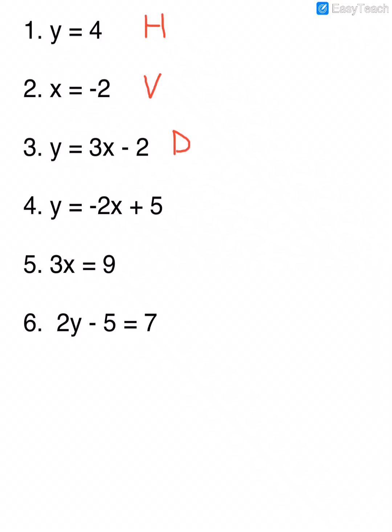For number 4, y equals negative 2x plus 5. That line would be diagonal. Number 5 is 3x equals 9. Well, even though the x is not by itself, x is the only variable, so this line would be vertical. And for number 6, 2y minus 5 equals 7. Again, y is the only variable, so this would be a horizontal line, HOY.